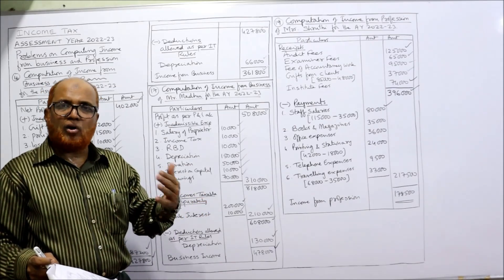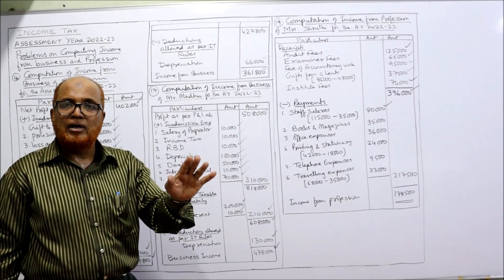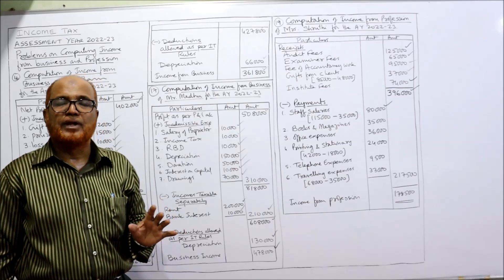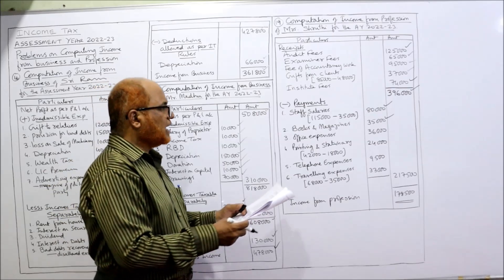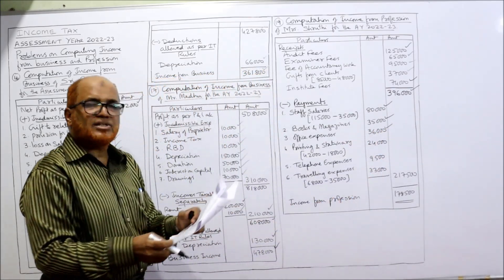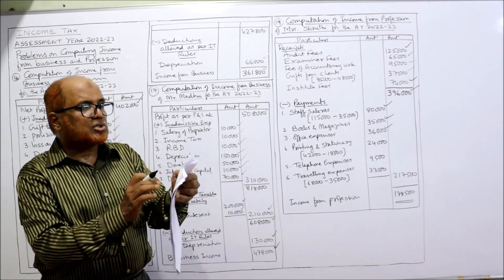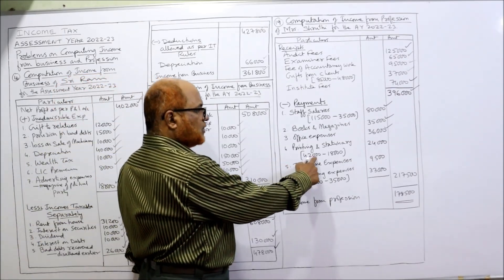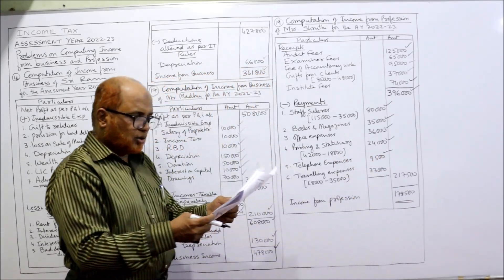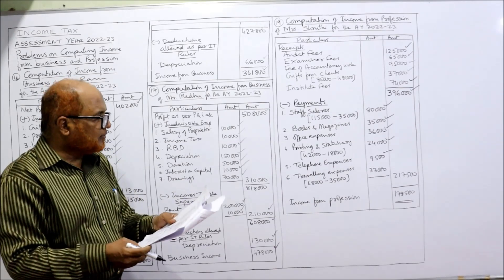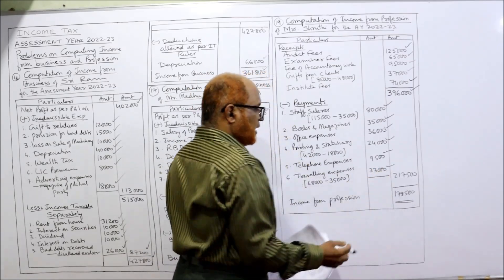Books and magazines: periodicals, magazines, newspapers are allowed. If only books were given it would be capital expenditure and 40% depreciation would apply, but since books and magazines are given together, the full 35,000 is allowed. Office expenses fully allowed — 36,000. Printing and stationery: total payment 42,000 minus closing stock of stationery 18,000 equals 24,000 allowed. Telephone expenses 9,500 fully allowed. Donations not allowed as deduction. Traveling expenses: total 68,000 minus personal travel 35,000 equals 33,000 allowed.